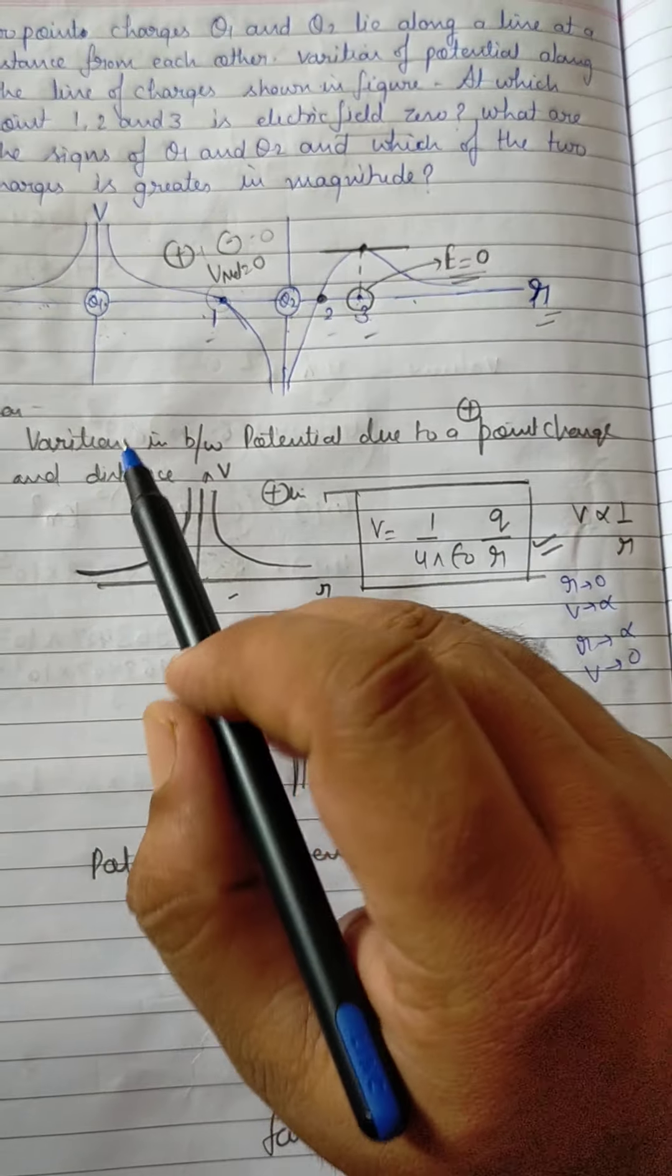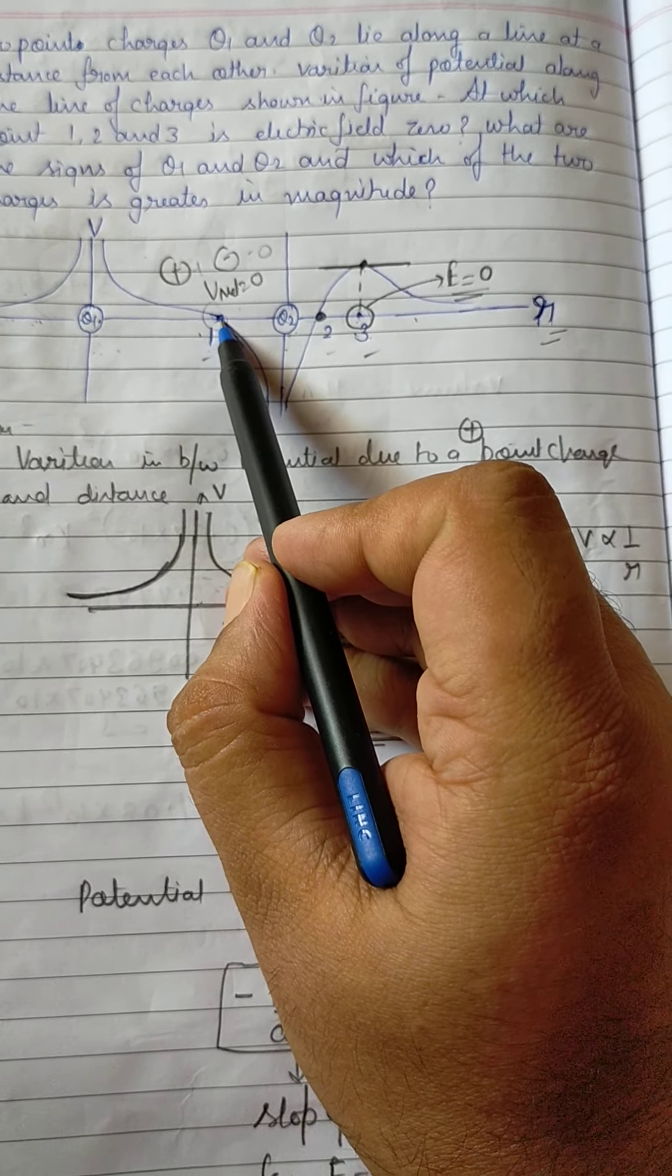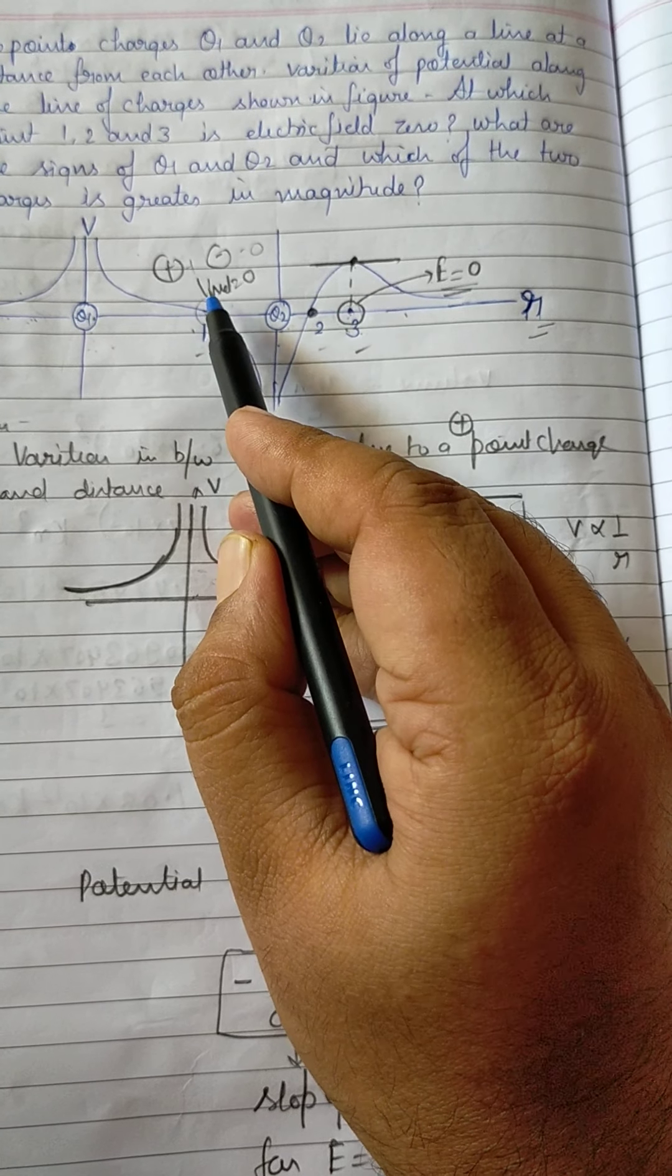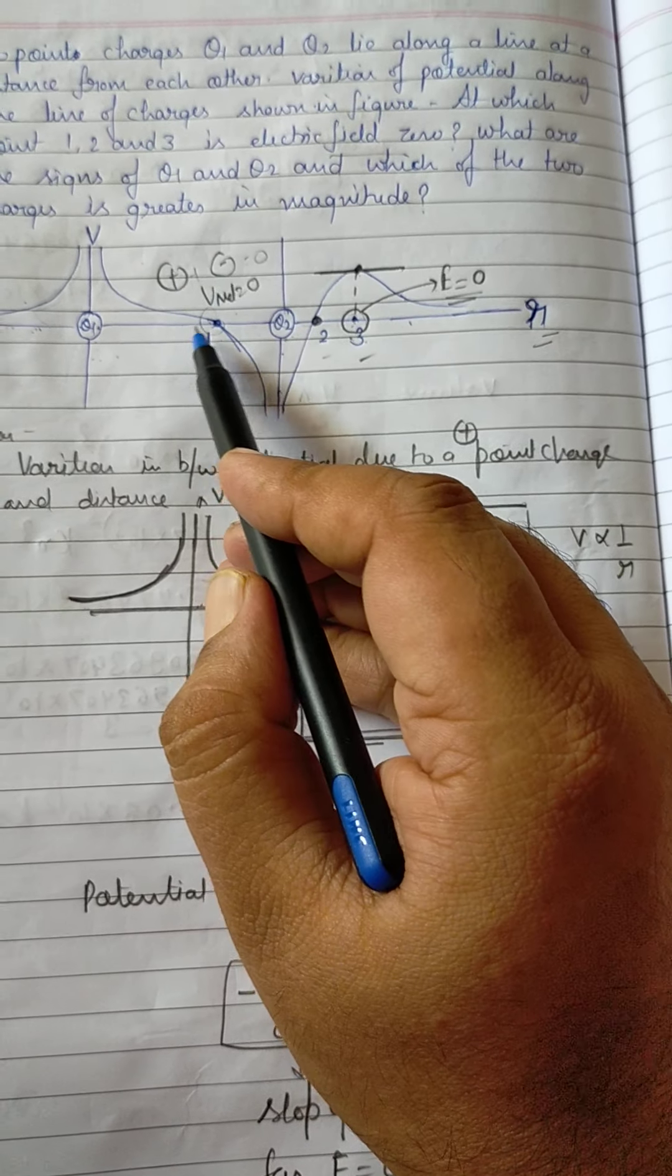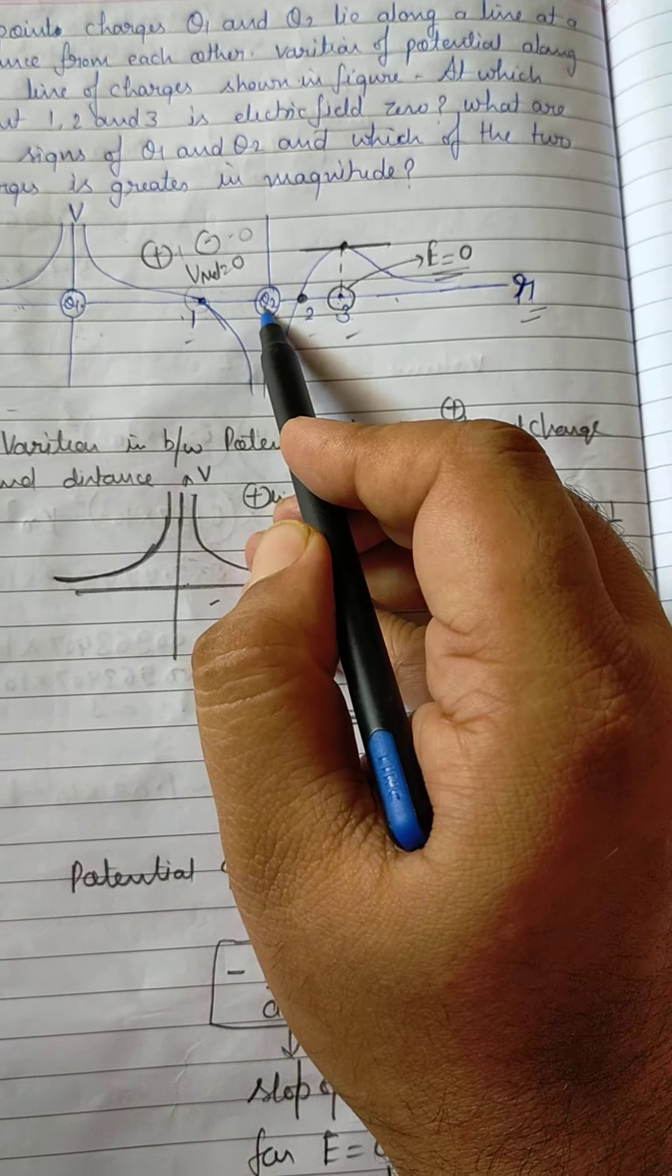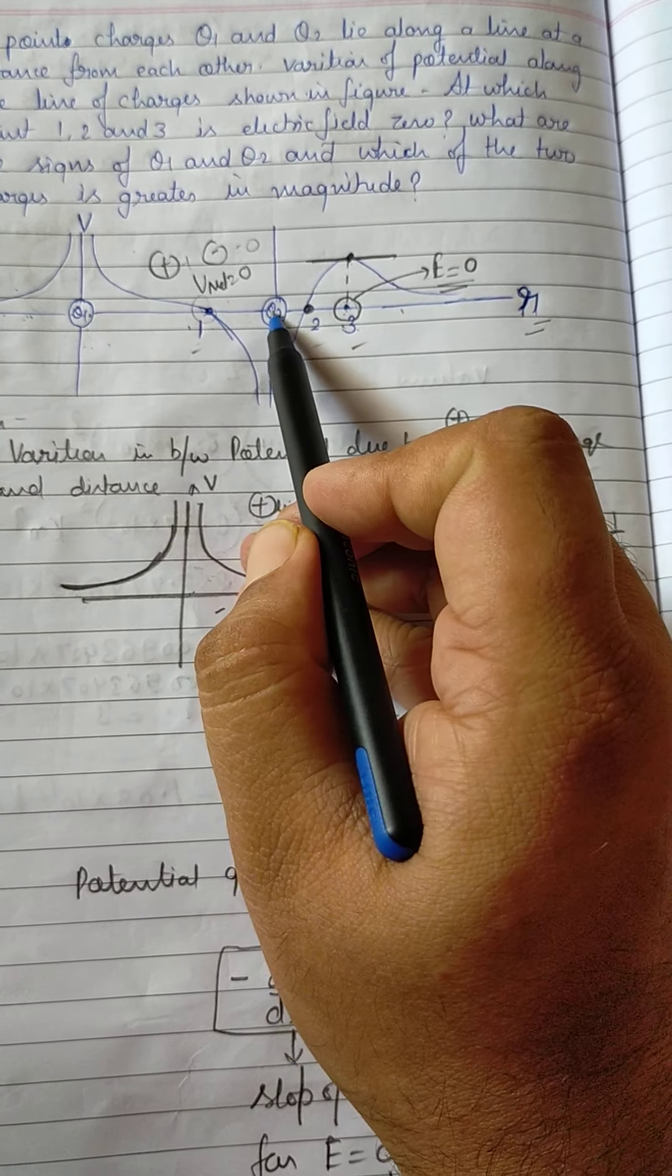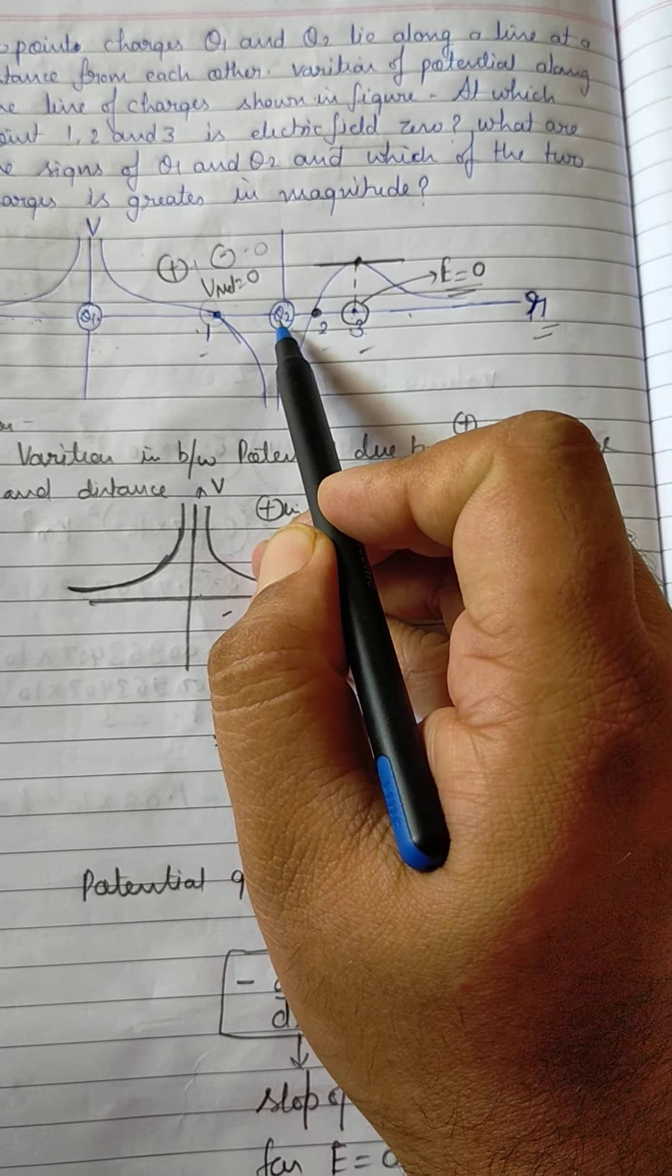इसके बाद point आता है, which one is greater in magnitude? तो यहां पे ध्यान से देखिएगा। First point पे potential zero है। अगर यह first point दोनों charges के between होता, तो दोनों charges की strength equal होती, क्योंकि यहां पे net potential zero है। Net कैसे निकालेंगे? q1 के due to निकालेंगे plus q2 के due to निकालेंगे, दोनों को add करेंगे। इस point पे net zero है। लेकिन यह point दोनों से middle में नहीं है, midpoint पे नहीं है। यह आपका closer to q2 है। It means साफ clear है कि q2 पे charge कम होगा और q1 पे charge ज्यादा होगा। So in between q1 and q2, q1 is bigger in magnitude than q2.